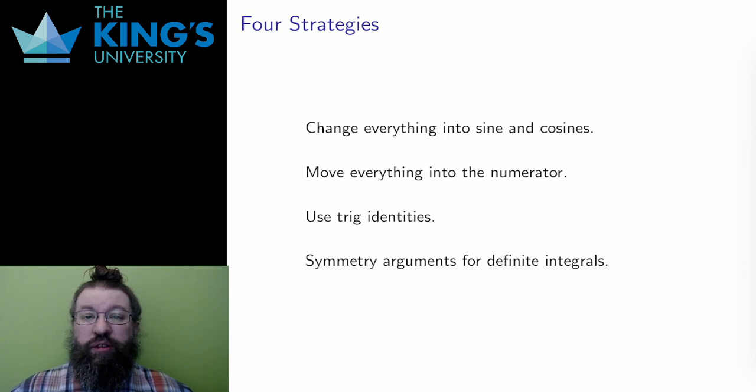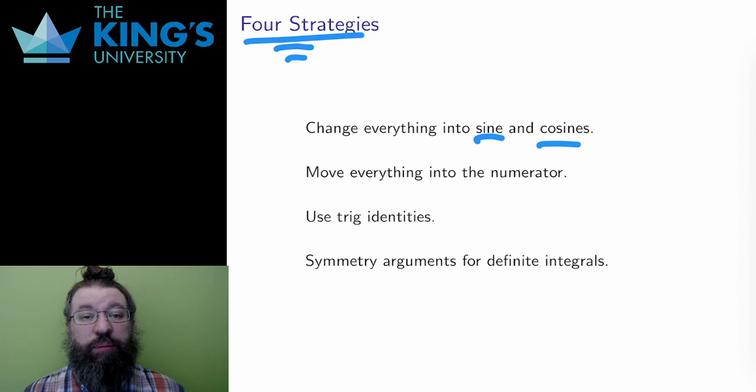To approach a trig integral, I suggest you try one of the four following approaches. I'll give the general ideas here, and I'll show use of all of these in the examples. Sometimes it's best to change everything into sine and cosine. All trig functions can be expressed as ratios of sine and cosine, so this is always possible. In the form of sines and cosines, sometimes there are useful cancellations, and sometimes a substitution becomes clearer.